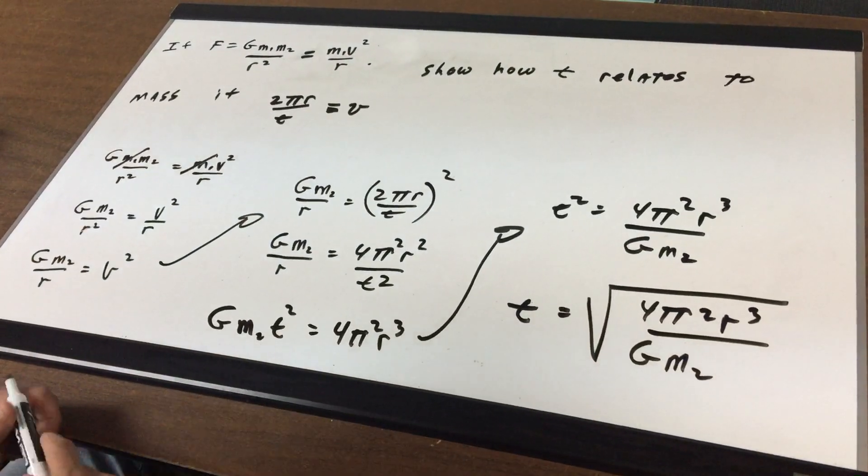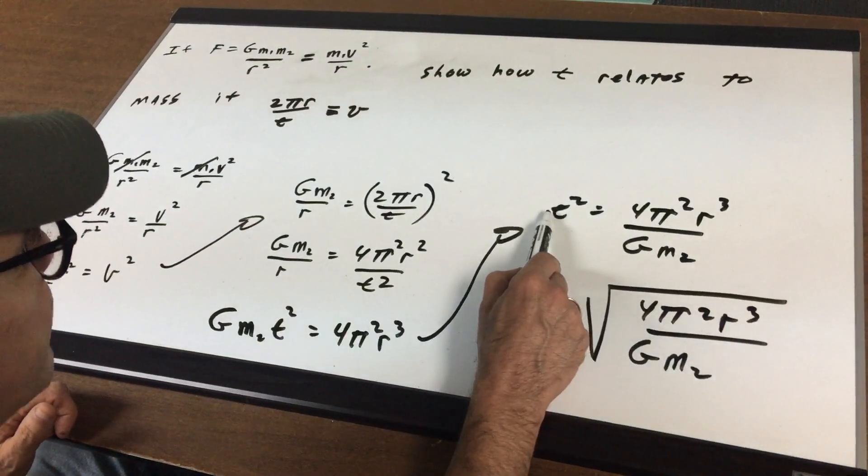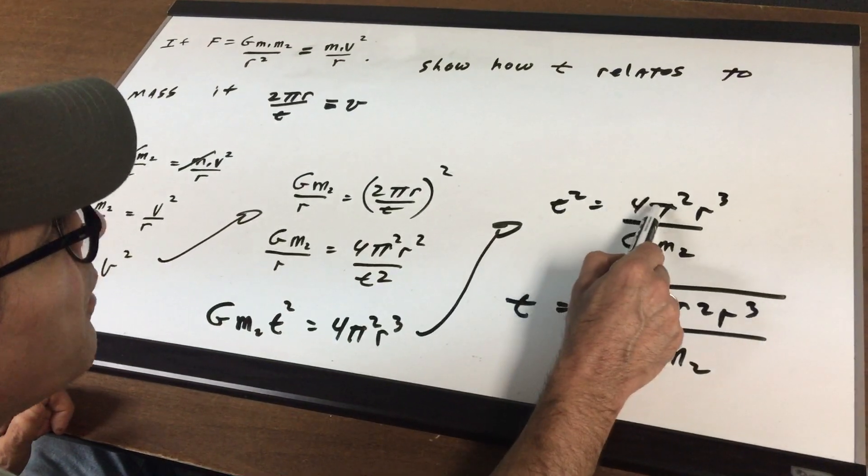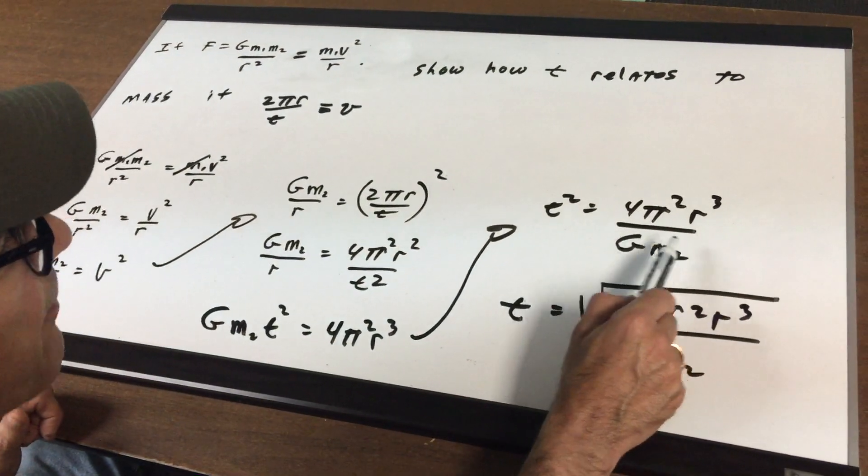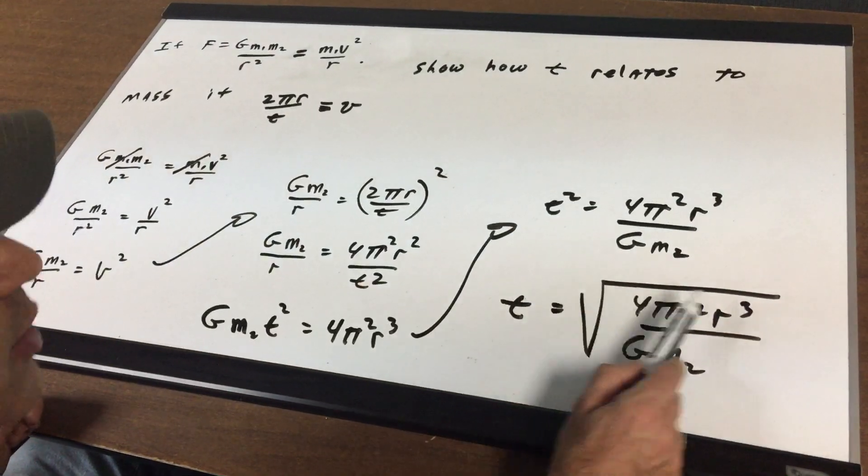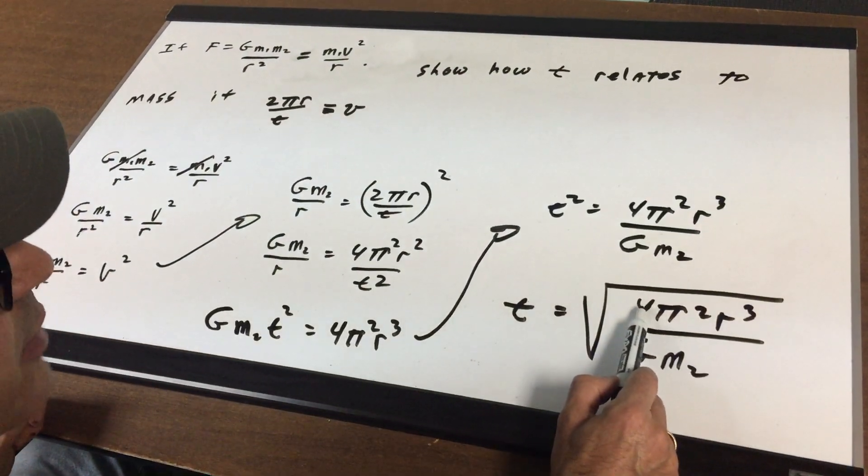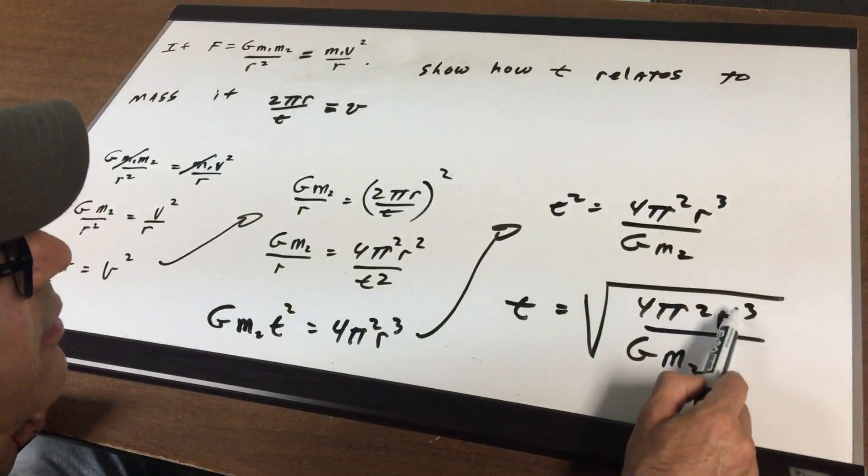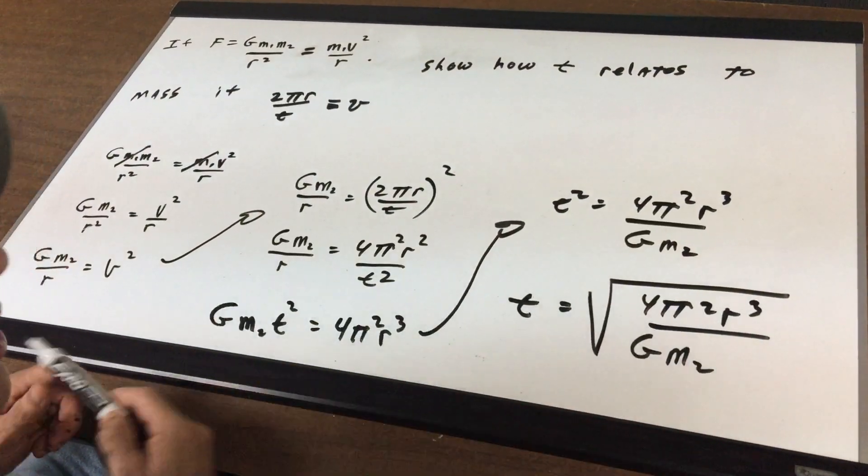Divide both sides by g m2. So I get t squared is 4 pi squared r cubed over g m2 and then square root it and you get t equals the square root of 4 pi squared r cubed divided by g m.